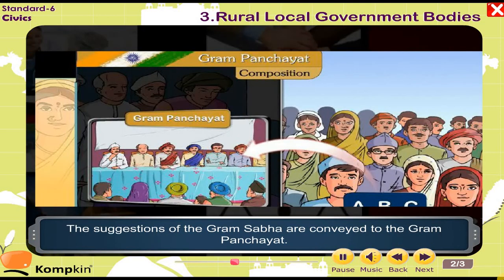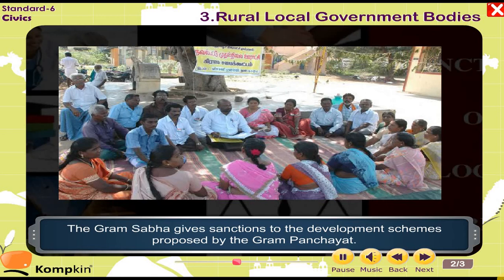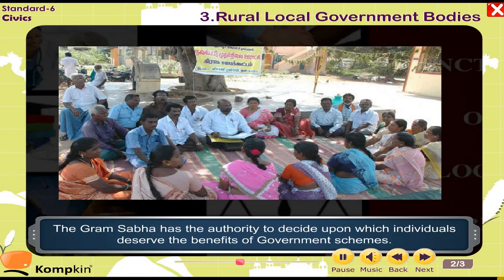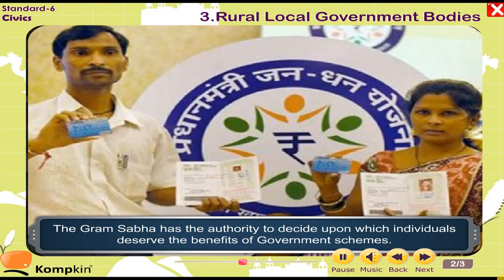The suggestions of the Gram Sabha are conveyed to the Gram Panchayat. The Gram Sabha gives sanction to the development schemes proposed by the Gram Panchayat, and has the authority to decide upon which individuals deserve the benefits of government schemes.